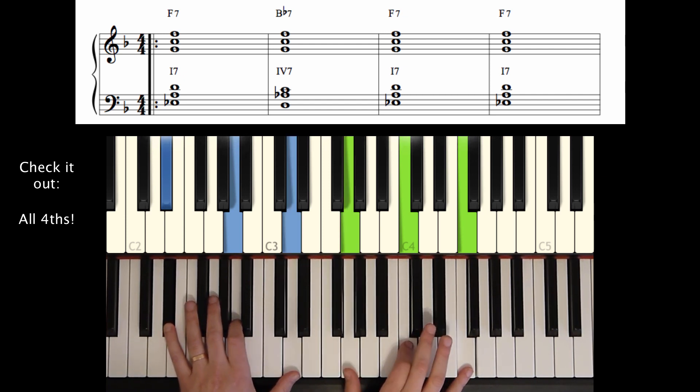We have our 3rd and 7 holding down the bottom of the voicing. Then we have some tensions in the middle, 13 and 9, and finally the 5th and the root, a little more airy sound up top.